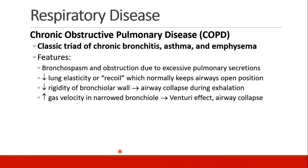The next disease, somewhat related, is called chronic obstructive pulmonary disease, or COPD. COPD presents as a classic triad of chronic bronchitis, asthma, and emphysema. These patients will have bronchospasm and obstruction due to excessive pulmonary secretions. Their lungs lose their elasticity or recoil, which normally keeps the airways open, and their bronchiolar wall becomes less rigid, all of which leads to airway collapse during exhalation.